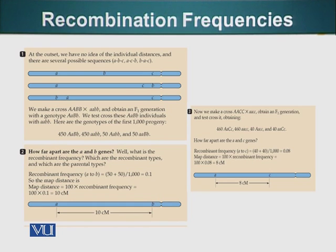So the frequency, the way we will calculate their frequency is, as I have mentioned, we will add the recombinant phenotypes, which is 50 plus 50 and divided by the total number of offsprings, which is 450 plus 450 plus 50 plus 50. The number equals 1000. So the recombinant frequency is 0.1.